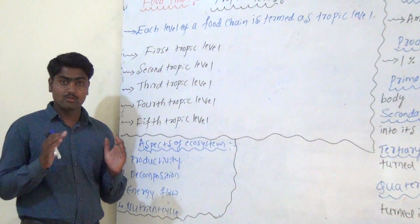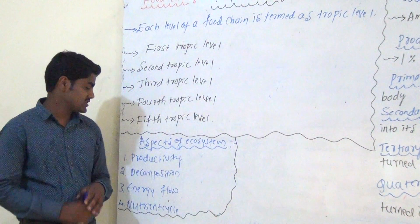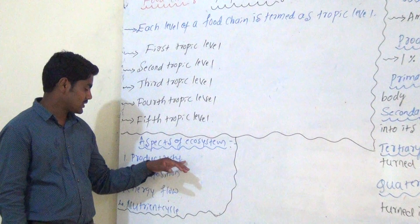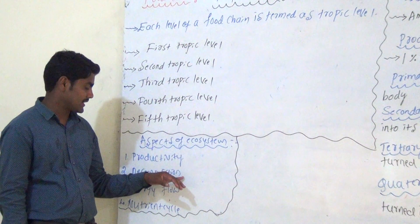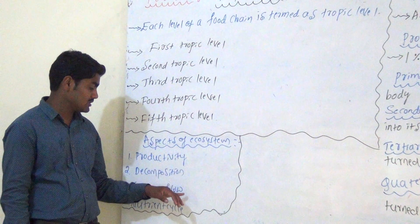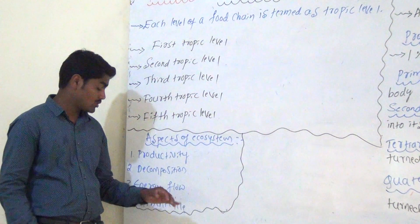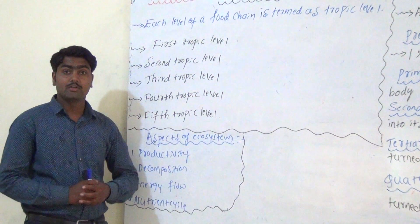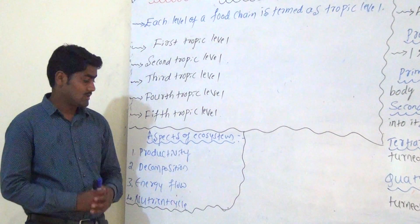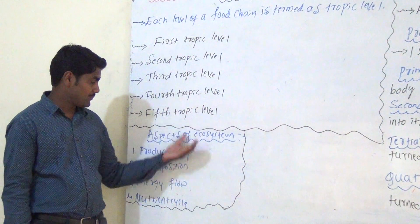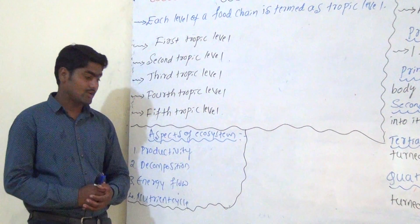Already you know there are 4 aspects of ecosystem: first productivity, second decomposition, third energy flow, and fourth nutrient cycle. You know there are 4 aspects of ecosystem.